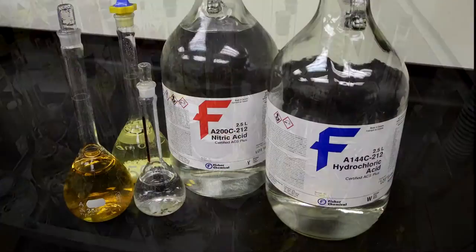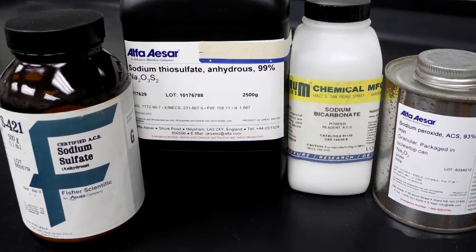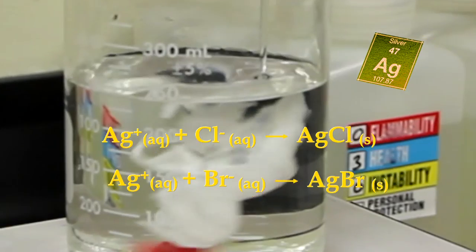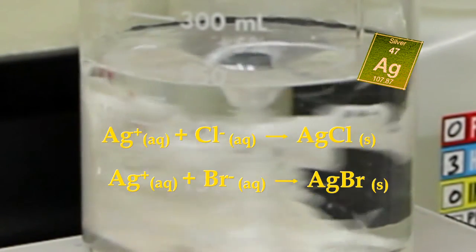There are numerous chemicals used to precipitate precious metals to compounds or directly to their metallic form. Silver uses chlorides and bromides to precipitate silver chloride and silver bromide.